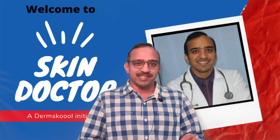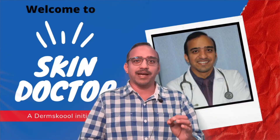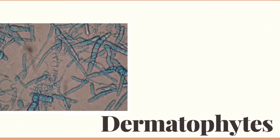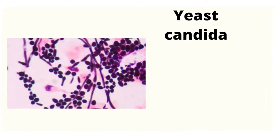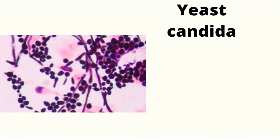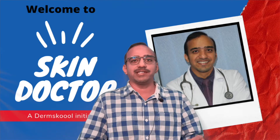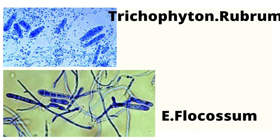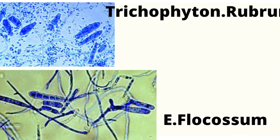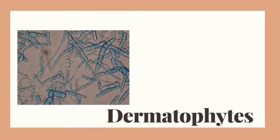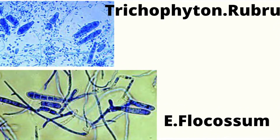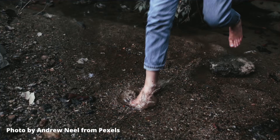Tinea Pedis is a fungal infection caused by fungi belonging to the category called dermatophytes, and sometimes even yeast. The different kinds of dermatophytes which cause Tinea Pedis are Trichophyton rubrum, Trichophyton interdigitale, and Epidermophyton floccosum. These are the three kinds of dermatophytes that can cause Tinea Pedis, and sometimes yeast like Candida can also cause it.